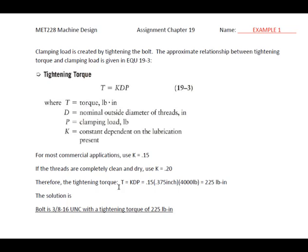Therefore, the solution to this problem is T equals KDP. We're going to use 0.15 here. 0.375 is our nominal diameter of the bolt, and P is the clamping load that we're going to develop, and therefore, we get 225 pound-inches of torque. Therefore, our solution to this problem is you're going to use a 3/8-16 UNC bolt with a tightening torque of 225 pound-inches.